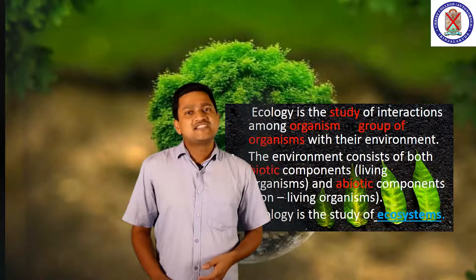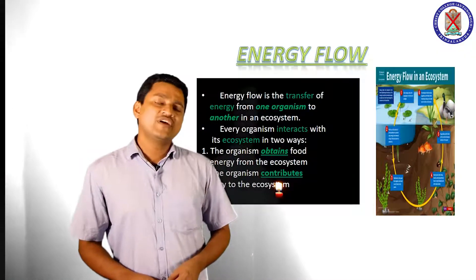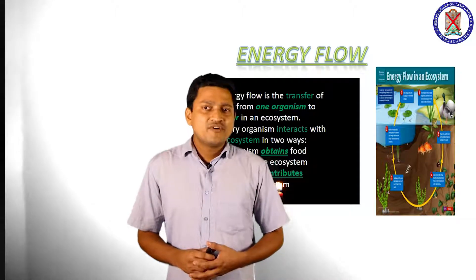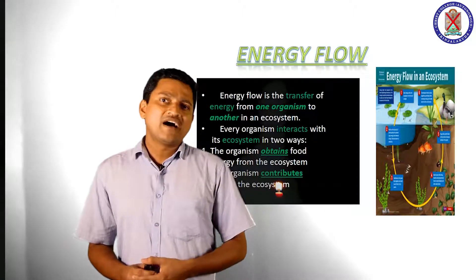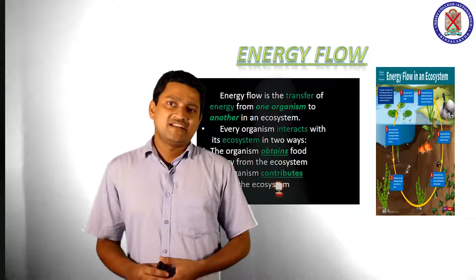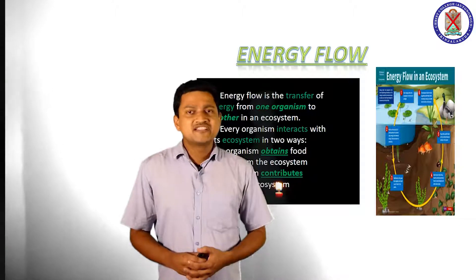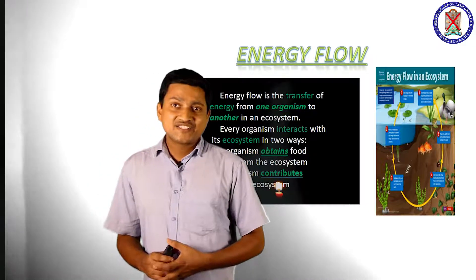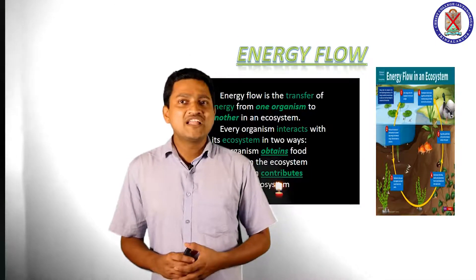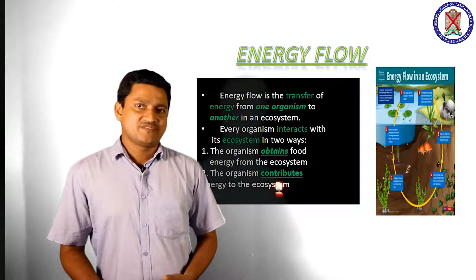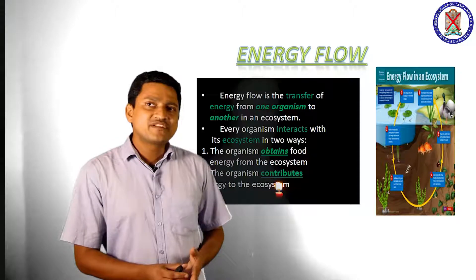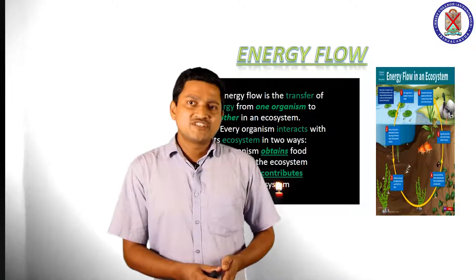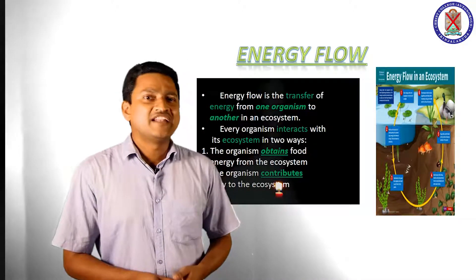Next we discuss about energy flow in an ecosystem. In the previous class we discussed about food chain, food web and trophic level. In this class we discuss about energy flow. Energy flow is a transfer of energy from one organism to another in an ecosystem, simply known as energy flow.